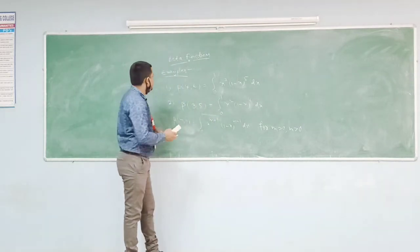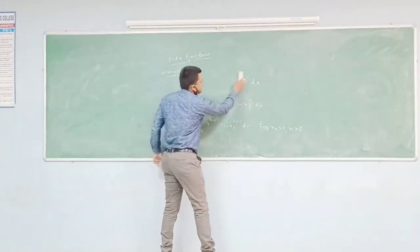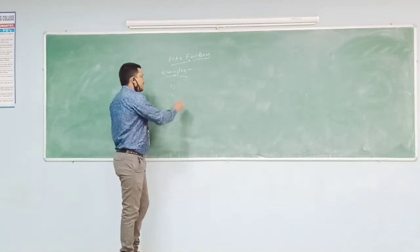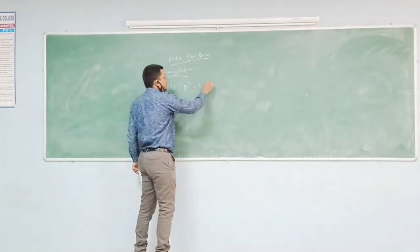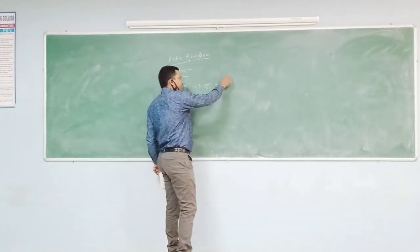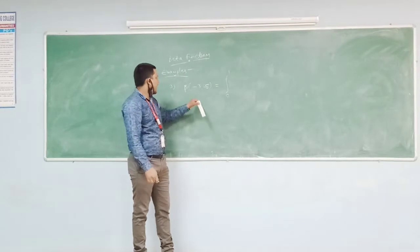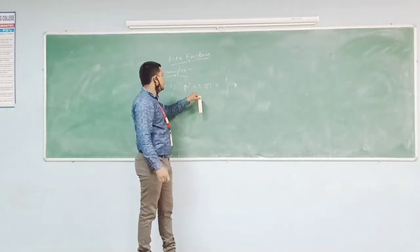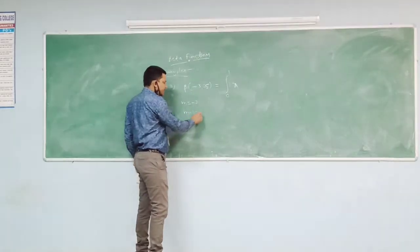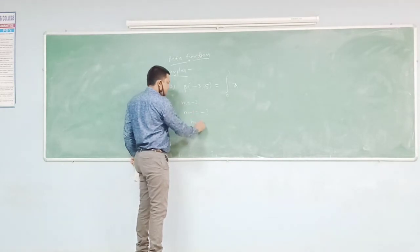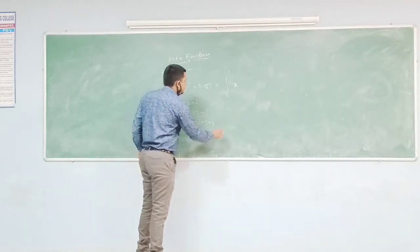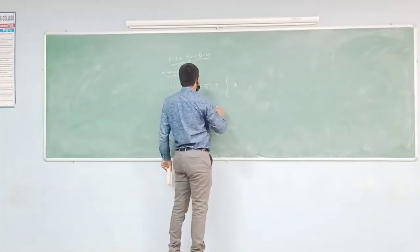We can take an example which is not a beta function. Consider beta of minus 3 comma 5. Here m minus 1 equals minus 3, so m equals minus 3 plus 1, which is minus 2. Since m is less than zero, this is not a beta function.